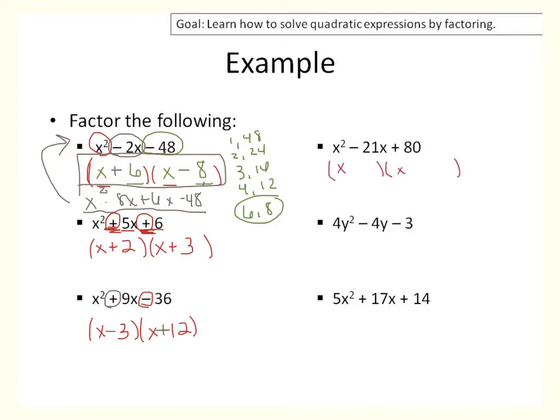Here we're trying to multiply to be 80 and add to be 21. Factors: 1 and 80, 2 and 40, 4 and 20, 5 and 16 — there we go, 5 and 16 make 21. Because this is positive, they have to have the same sign, but they're adding to be a negative, so they're both going to be negative. Negative 16x minus 5x gives negative 21x.